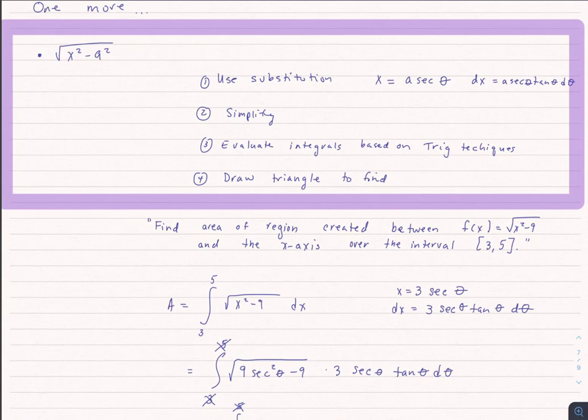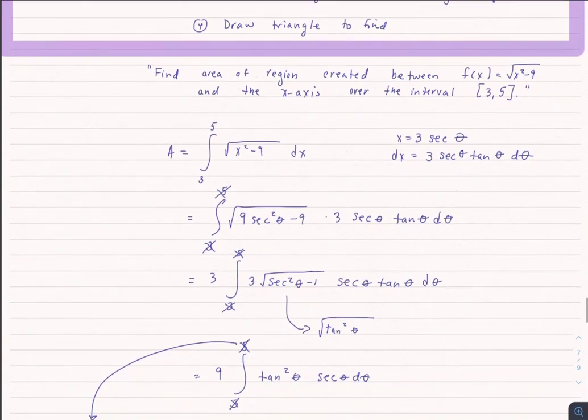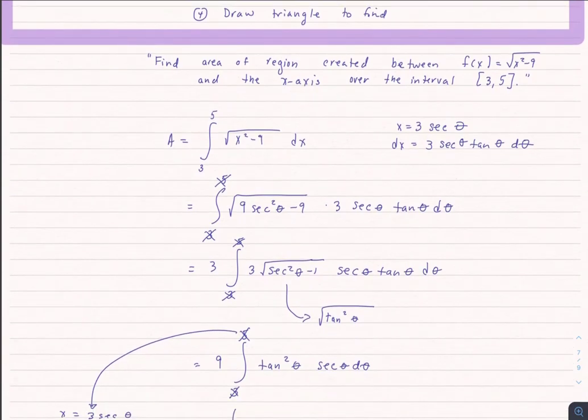For example: find the area of a region between the function square root of x squared minus 9 and the x-axis over the interval from 3 to 5. The area equals the integral from 3 to 5 of the square root of x squared minus 9 dx. Using the substitution x equals 3 secant theta, dx equals 3 secant theta tangent theta d theta. Making the substitutions, what's under the square root simplifies to tangent squared theta — based on the Pythagorean identities — giving us 9 tangent squared theta times secant theta d theta.